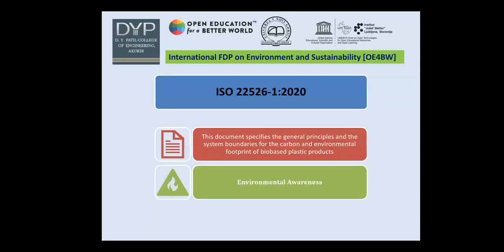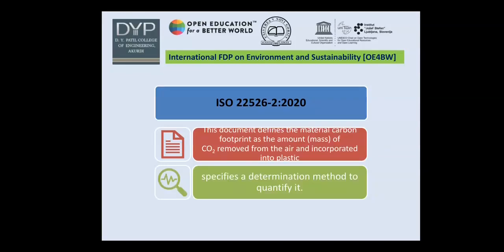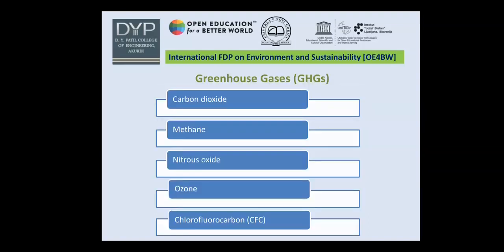ISO 22526 Part 1, 2020 specifies general principles and system boundaries for the carbon and environmental footprint of bio-based plastic products and promotes environmental awareness. ISO 22526 Part 2, 2020 defines the material carbon footprint as the amount of CO2 removed from the air and incorporated into plastic, and specifies the determination method to quantify it.